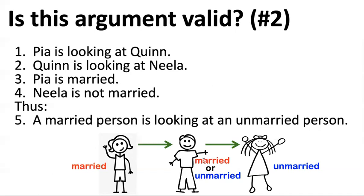Let's imagine Quinn is married. Then it is true that a married person is looking at an unmarried person, because Quinn is looking at Neela. And what if Quinn is unmarried? Then it is true that Pia is looking at Quinn, so a married person is looking at an unmarried person. This conclusion has to be true no matter what, given the information in the premises. So sometimes validity isn't so obvious, but this argument actually is valid. What we'll learn throughout this course is techniques for proving that even difficult arguments like this are valid.